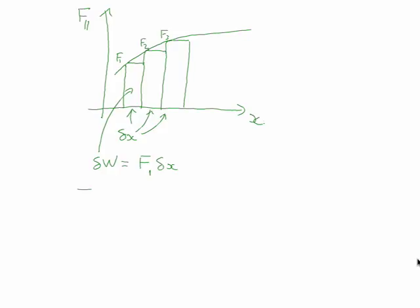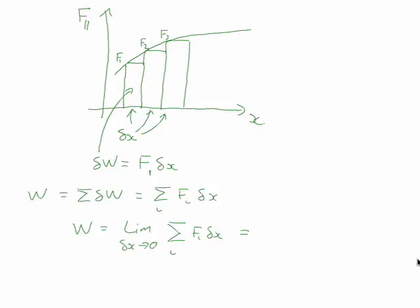We sum over all the delta W's to find the total work: it's the sum of fi times delta x, summing the areas of all these rectangles. But of course we get the answer wrong because the force is not constant over this delta x. So we take the limit as delta x goes to zero of the sum over i of fi times delta x, and that gives us the integral of the force dotted with dx.